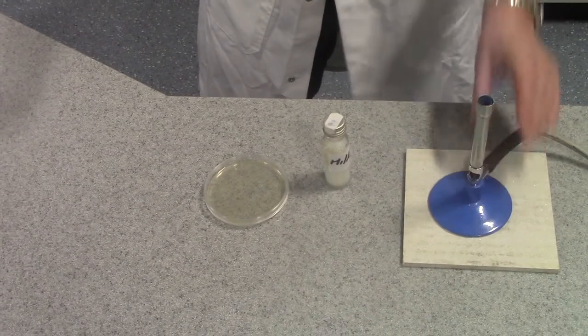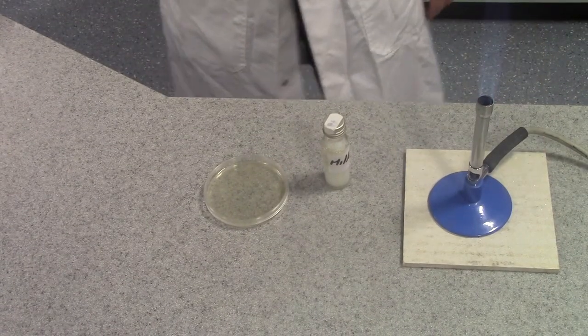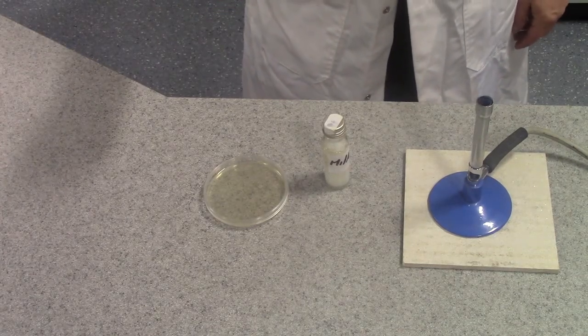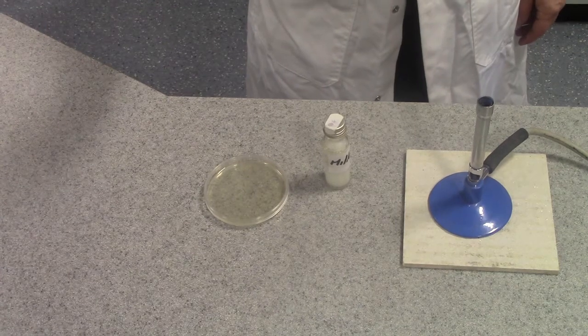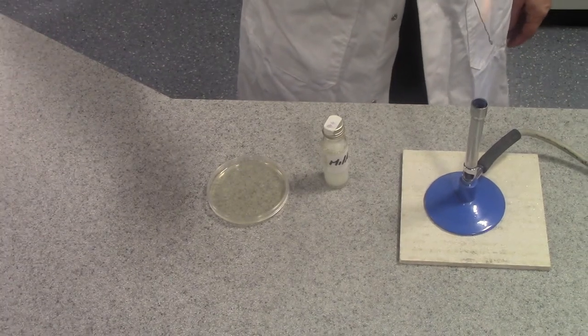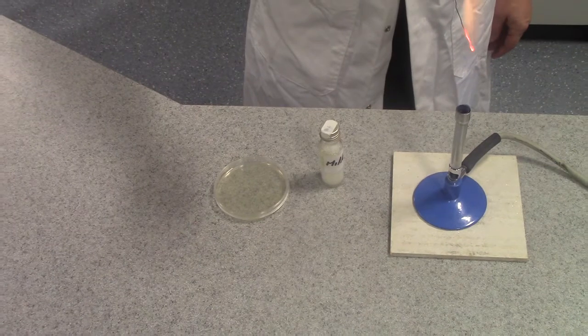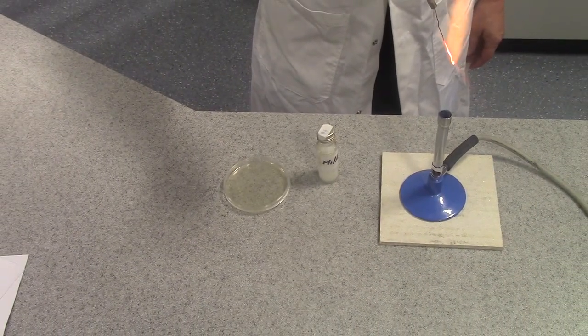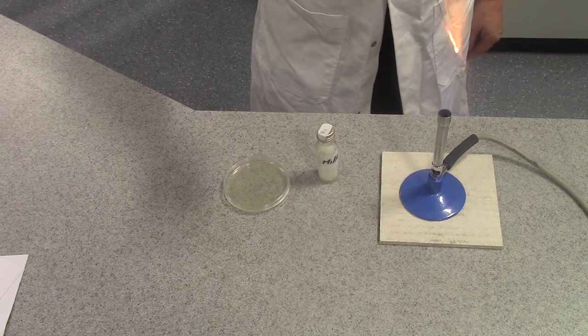First of all, turn the Bunsen burner to the hot flame, and then it's important to use aseptic technique throughout this procedure, so we're going to flame the loop until it becomes red hot. The purpose of this is to kill any bacteria or other microorganisms that are on the wire loop.